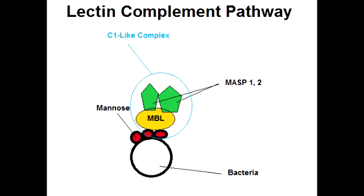At this point you have mannose which is bound to mannose-binding lectin, and this will then combine with MASP1 and MASP2, which is mannose-binding lectin associated serine protease. When this happens, this gives you something called a C1-like complex. So the collective combination of the mannose sugar with the mannose-binding lectin plus MASP1 and 2 will give you the C1-like complex, and this C1-like complex will perform the action similar to C1 protease that we saw in the classic pathway.